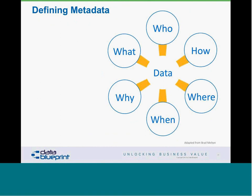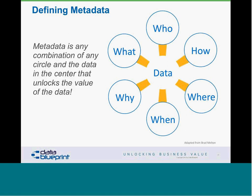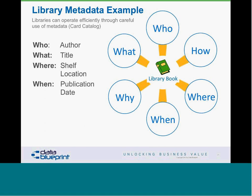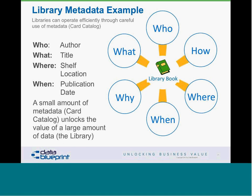My colleague Brad Melton offered a great representation: any combination of the circles — who, how, what, where, when, why — around a data item at the center unlocks the value of that data. These are all metadata about that 42. Why? Drinking age. What? Age in years rather than weeks. If we put a library book at the center: who is the author, what is the title, where is the shelf location, when is the publication date. A very small amount of metadata — the card catalog — unlocks the large amount of data in the library.